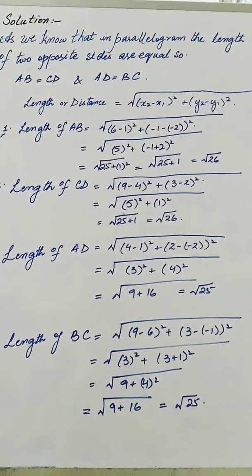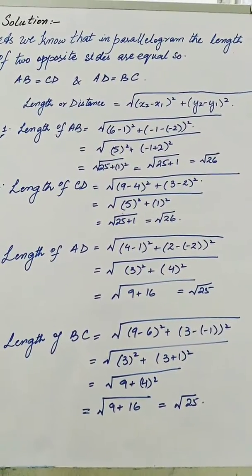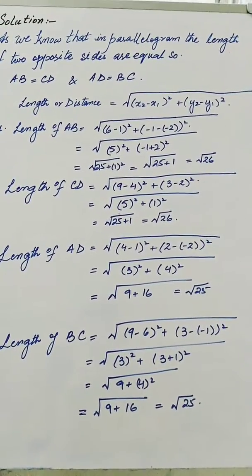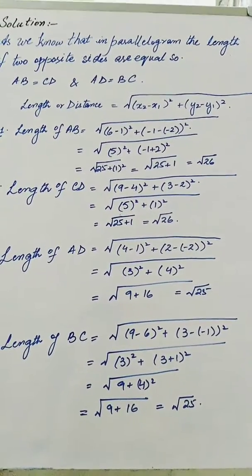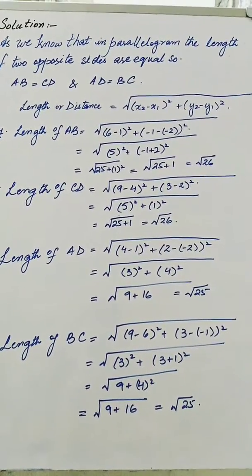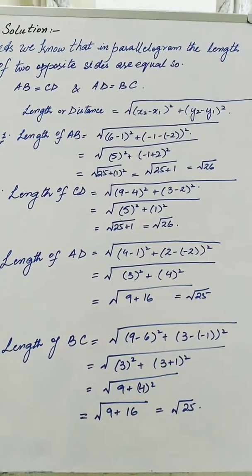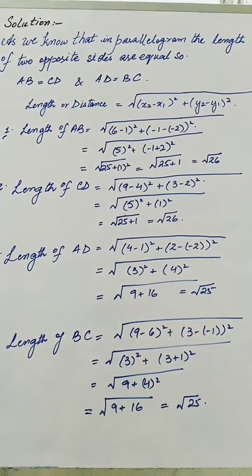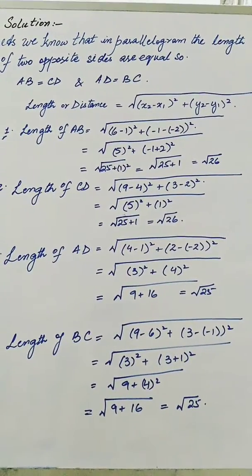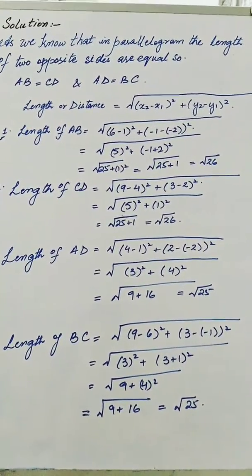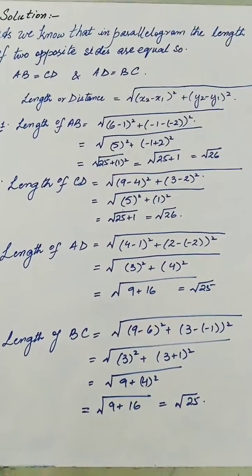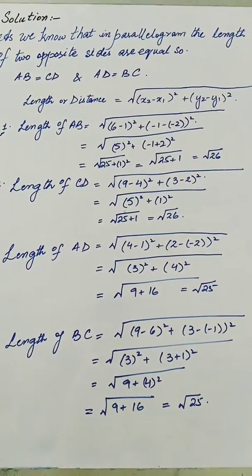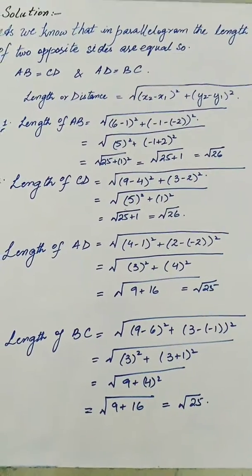Now we calculate the length of AD which comes out as root 25, and also the length of BC comes out as root 25. We have simply put the values in the formula and calculated, and proved the statement that these 4 coordinates are the vertices of a parallelogram.